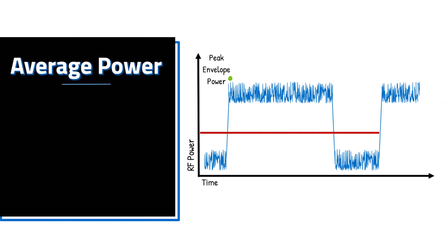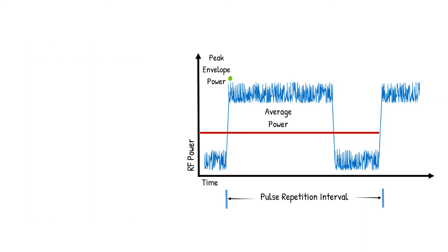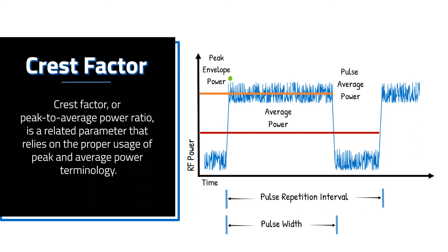When it comes to average power, that term may refer to the average power over the pulse repetition interval, which includes both the signal burst and the time interval between the next pulse. And others may desire the average power of just the signal burst, which we'll refer to as pulse average power.